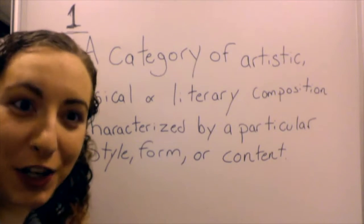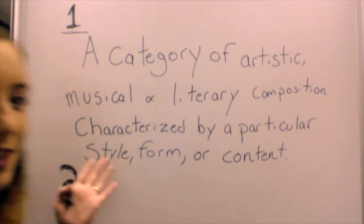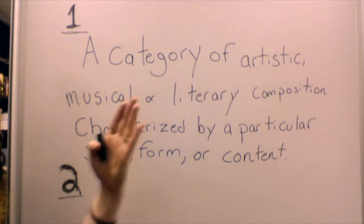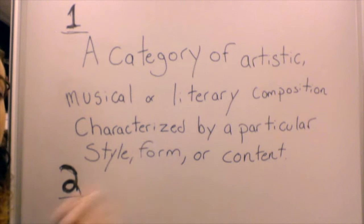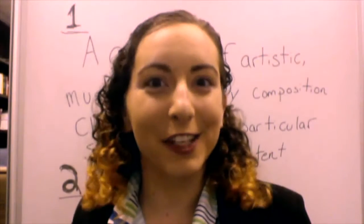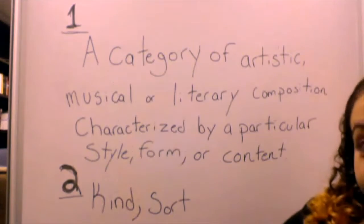So, what is a genre? A good definition of genre might be this: a category of artistic, musical, or literary composition characterized by a particular style, form, or content. Another good definition is simply: kind or sort.